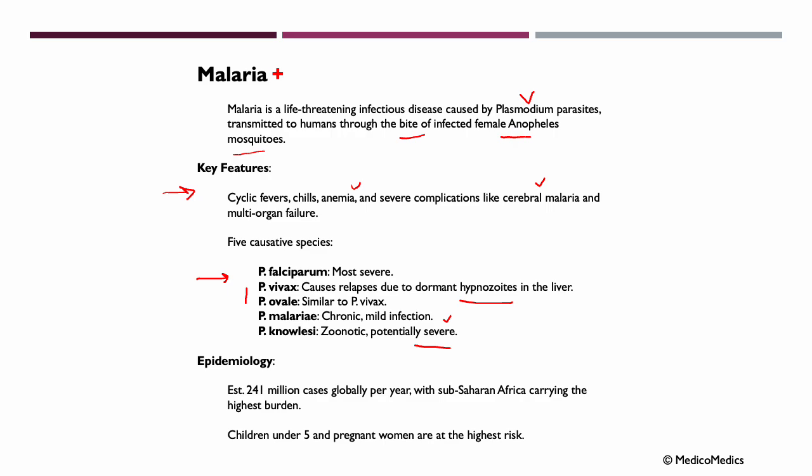Plasmodium knowlesi is a zoonotic species, meaning it normally infects animals but can also infect humans, and it has the potential to cause severe illness. It is estimated that about 241 million cases appear globally every year, with sub-Saharan Africa carrying the highest burden. Vulnerable populations include children under the age of 5 and pregnant women, who are at increased risk of severe disease and mortality.